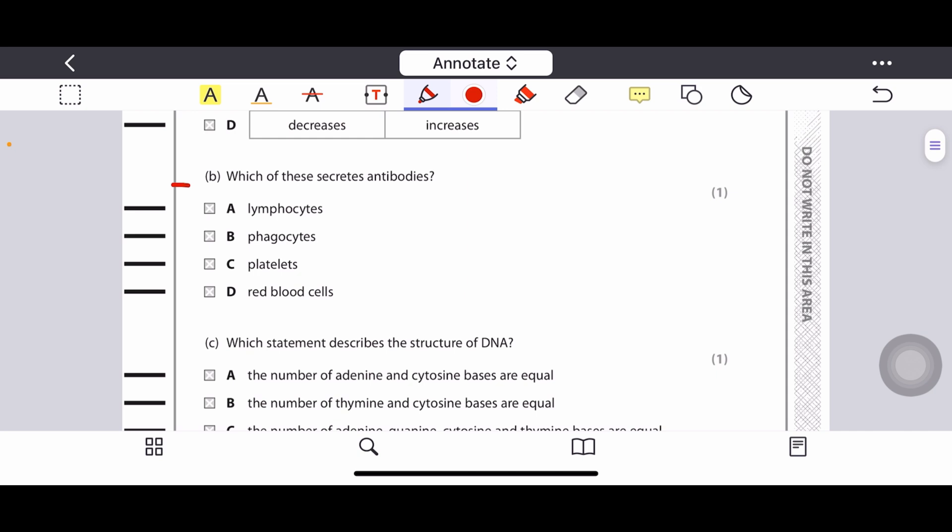Question B: Which of these secrete antibodies? Options are lymphocytes, phagocytes, platelets, red blood cells. Lymphocytes are the types of white blood cells that release antibodies. Phagocytes are white blood cells which engulf and kill the pathogens, so it's wrong. Platelets help in blood clotting along with fibrinogen. Red blood cells transport oxygen around the body with the help of hemoglobin. So correct option is A, lymphocytes.